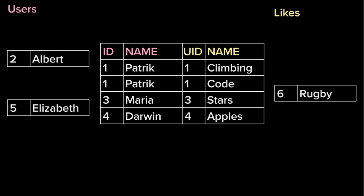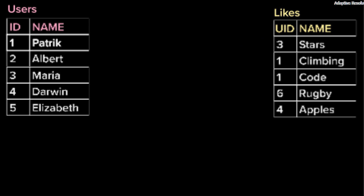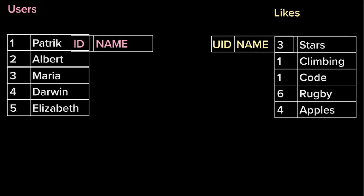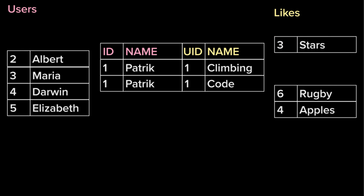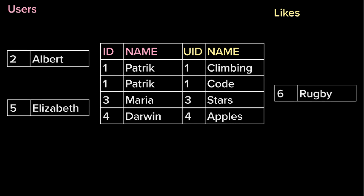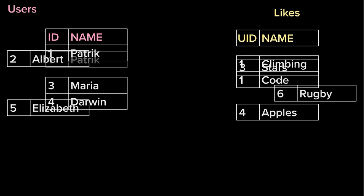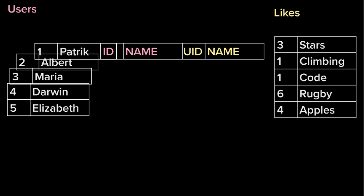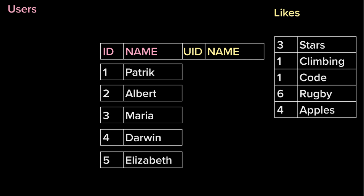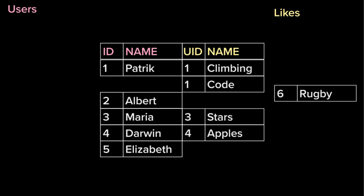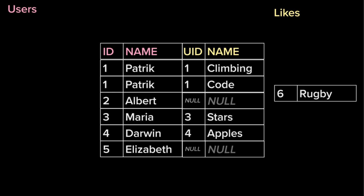Let's do a refresher - I have a clip to go through the different kinds of joins again. This is inner join: it joins every row that has a match together and leaves the others out. This is left join: we want to include all of the users - Patrick, Albert, Maria, Darwin, Elizabeth - regardless of whether there's a match. We just put them all in, then go ahead and match them. Patrick gets two rows, and then everyone else gets assigned nulls. That is a left join.